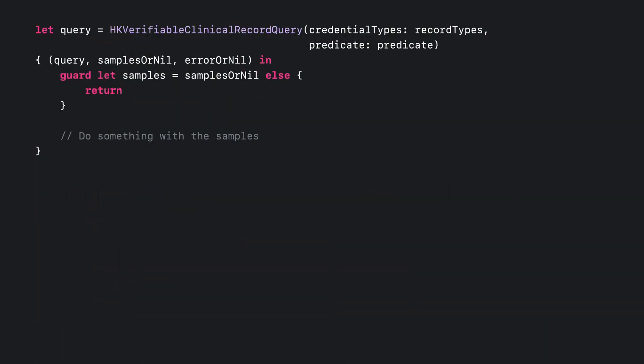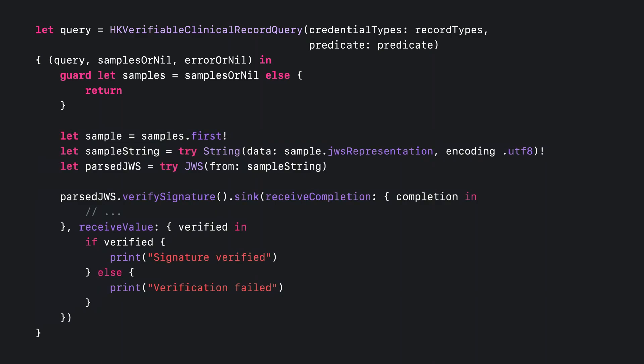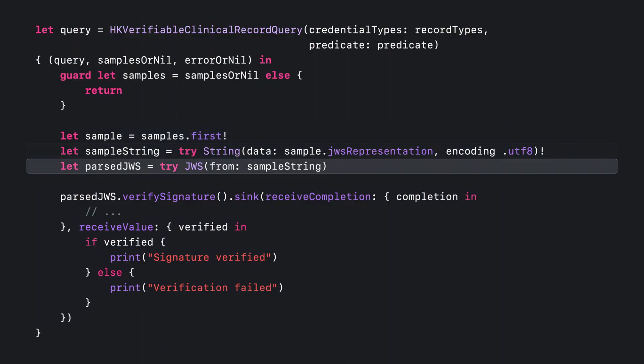Now that your data model and all logic needed to verify its authenticity is defined, you can put everything together. Taking the earlier example of how to call the new API, you can replace the comment with a call to your new verification method. Since the API returns a list of all selected samples, you can select the first one from the list. Next, parse it from data to a string, then parse it using your compact serialization initializer. Finally, call your new verification method and listen for emitted Boolean results. And just like that, we've seen how to take a signed piece of clinical data, download the issuer's signing keys, and validate the signature of these records.